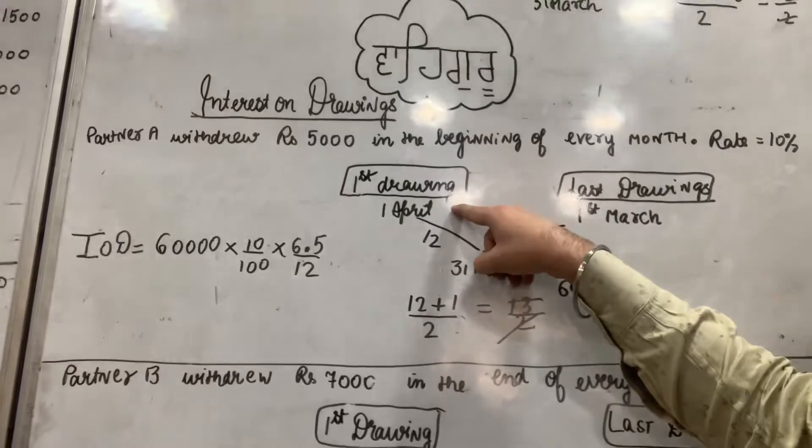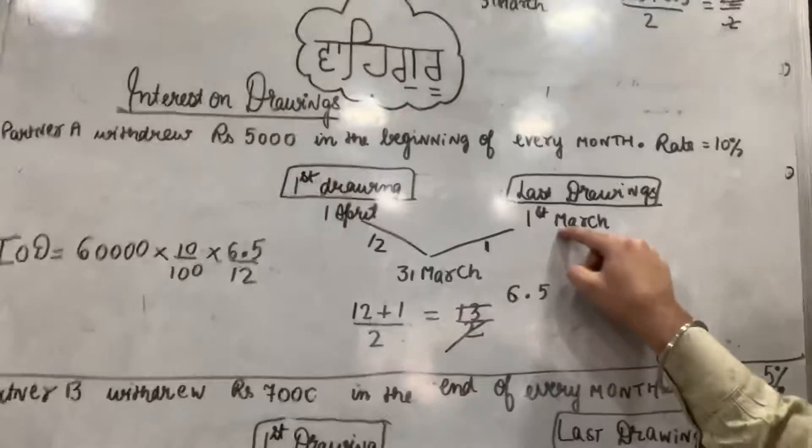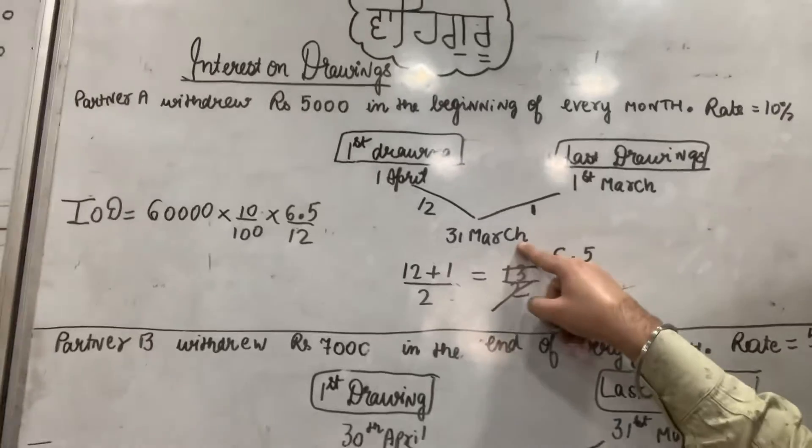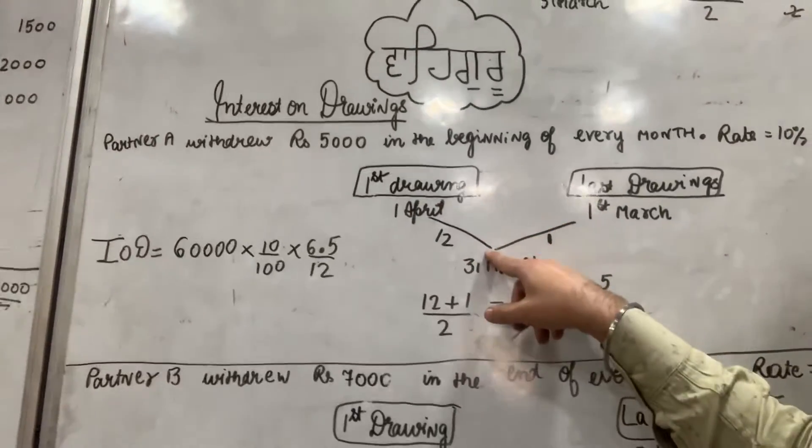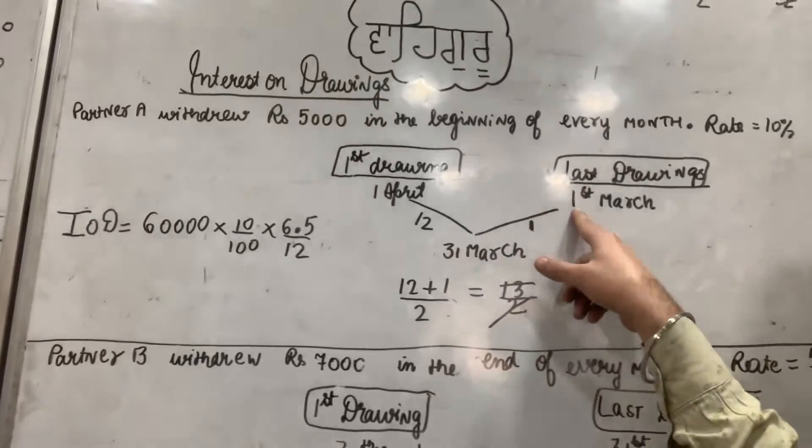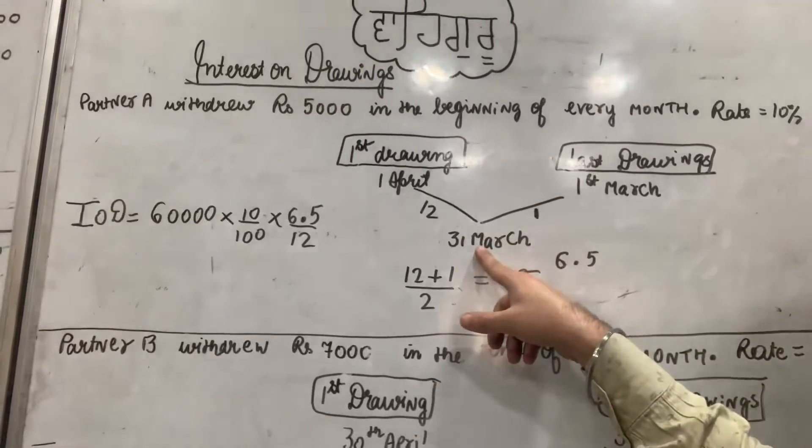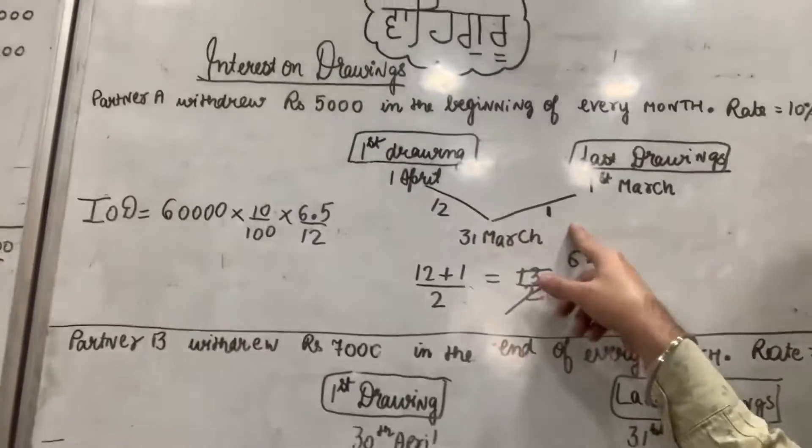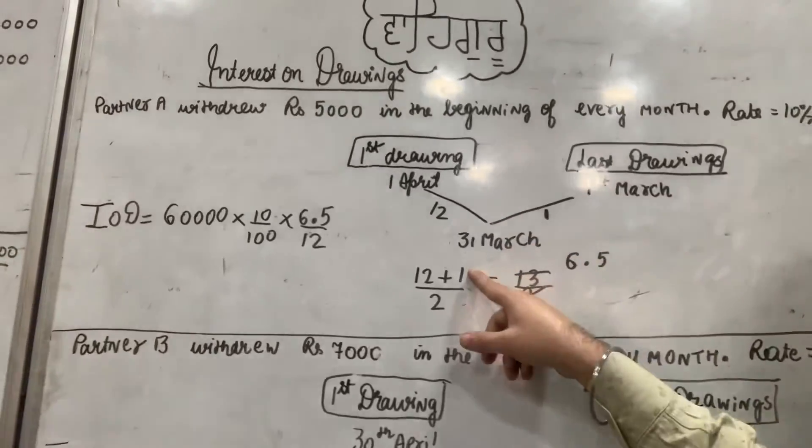Pura saal dekho karo. First drawing kab hogi? First April ko. Last drawing kab hogi? First March ko, saal ka ant. First April se leke 31st March tak kitne months ka samay hai? 12 months ka. 1st March se leke 31st March tak kitne months ka samay hai? 1 month ka. Dono ki average nikarna hai: 12 plus 1, 13 upon 2, that is 6.5.